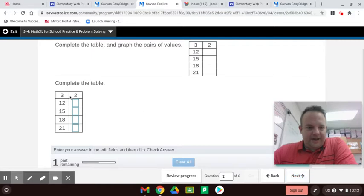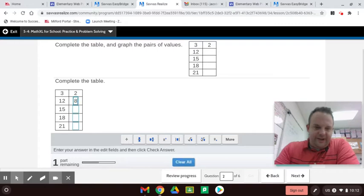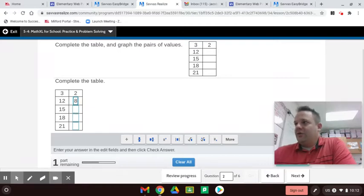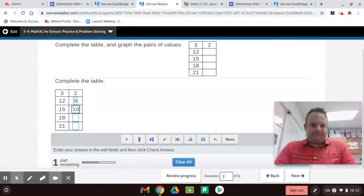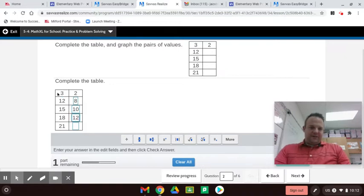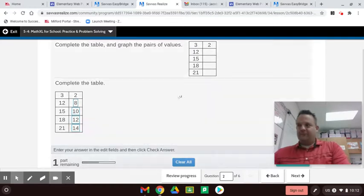Let's see what we got. All right, now 3 times 4 is 12, 2 times 4 is 8. 3 times 5 is 15, 2 times 5 is 10. Then you go, 3 times what is 18? That's right, 6. So 2 times 6 is 12. 3 times what is 21? That's right, 7. So 2 times 7 is 14. All right, good job.